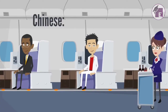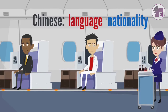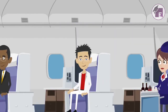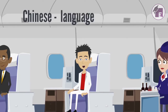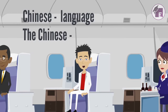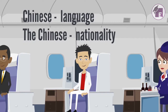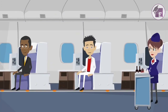Chinese — is it a language or a nationality? Technically it's both. The only thing that sets them apart is the use of the article. 'Chinese' without the article 'the' is a language. 'The Chinese' is a nationality. We'll talk more about languages and nationalities in detail a bit later — for now, that's all.